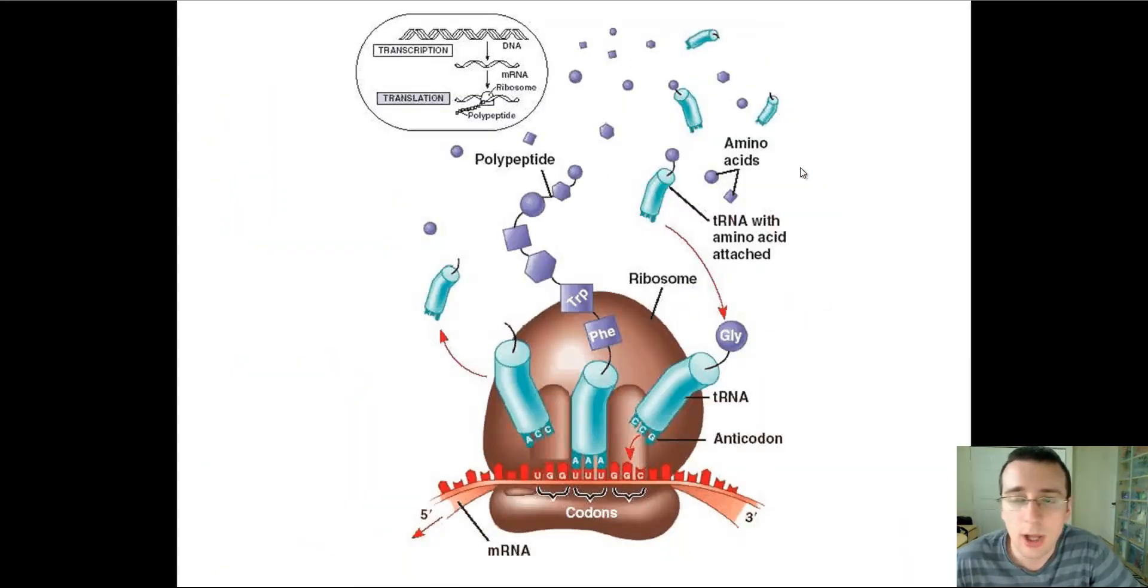All three kinds of RNA are necessary for this process to be completed. There is not one that is more important than the other. You can't translate without the message that gives the instructions, without the machinery that does it, which is the ribosome, or without the thing that brings the building blocks, which is the transfer RNA, which also acts to decode the actual message.